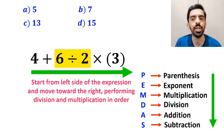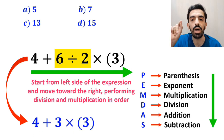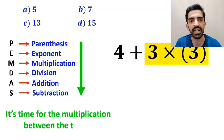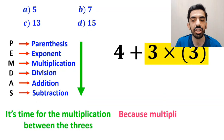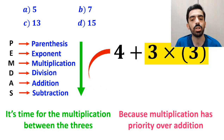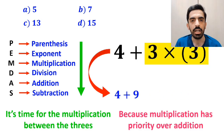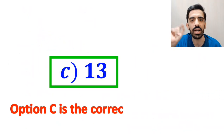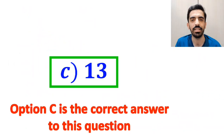So, first we perform the division between 6 and 2, which simplifies the expression to 4 plus 3 times 3. In the next step, it's time for the multiplication between the 3s, because multiplication has priority over addition. So instead of this expression, we can write 4 plus 9, which ultimately gives us the answer 13. Therefore, option C is the correct answer to this question.